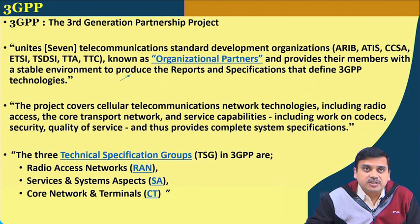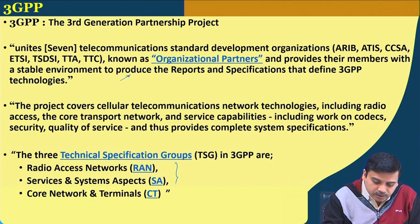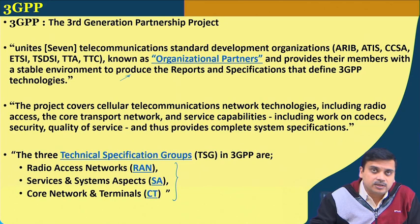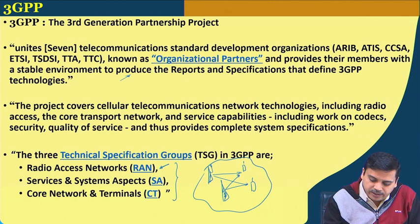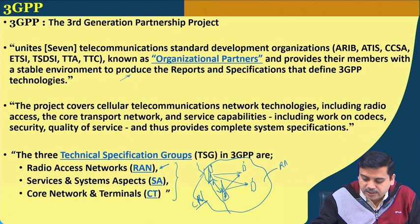As we can see from the 3GPP standard website, it unites several telecommunication standards development organizations. Many partners participate together towards creating specifications. There are three broad categories: one of them is the radio access network, which is the part between the base stations and the mobile units. The entire network where there will be multiple base stations and multiple mobile units, cross connected and interconnected — this last part of the network beyond which the core network starts is the radio access network part.